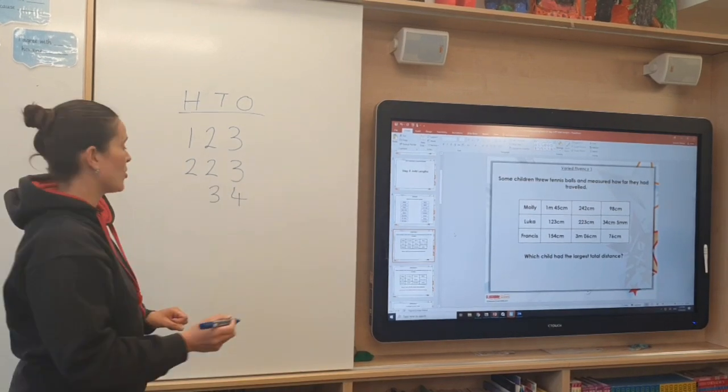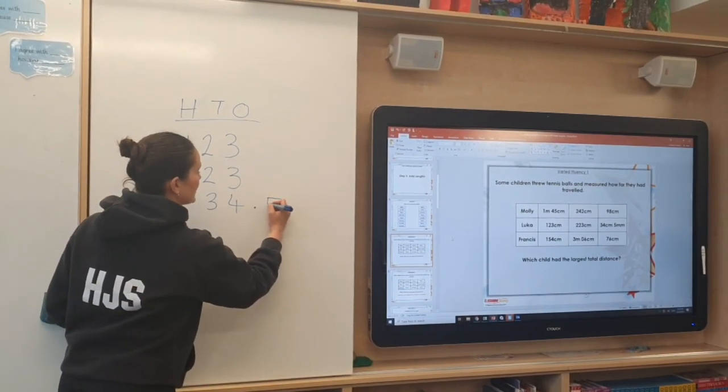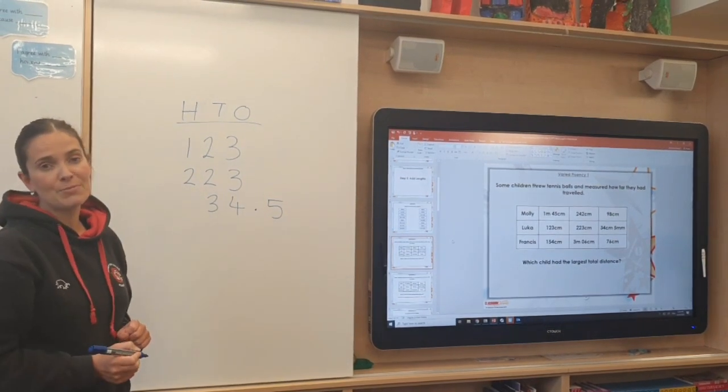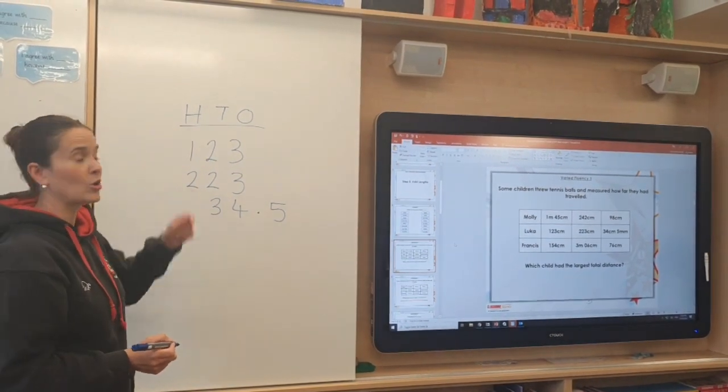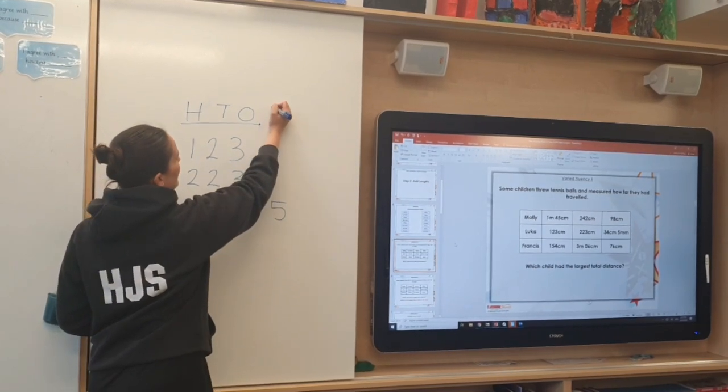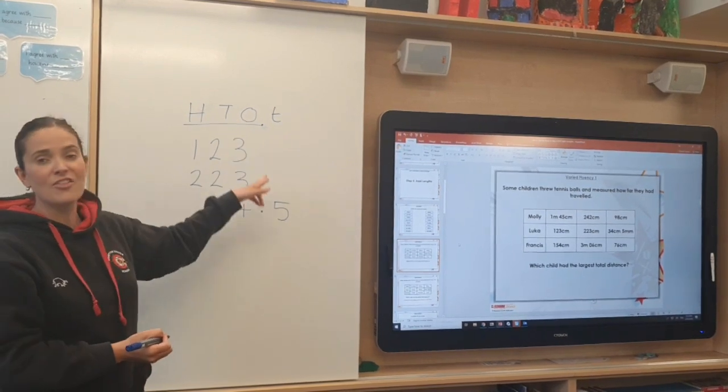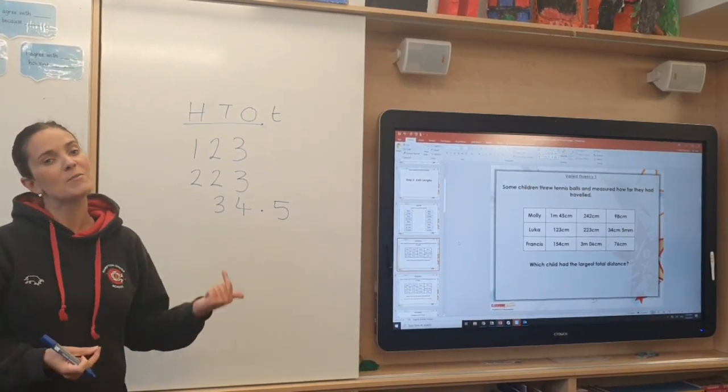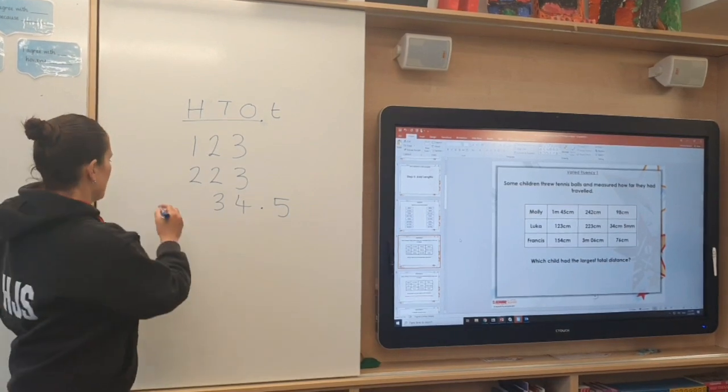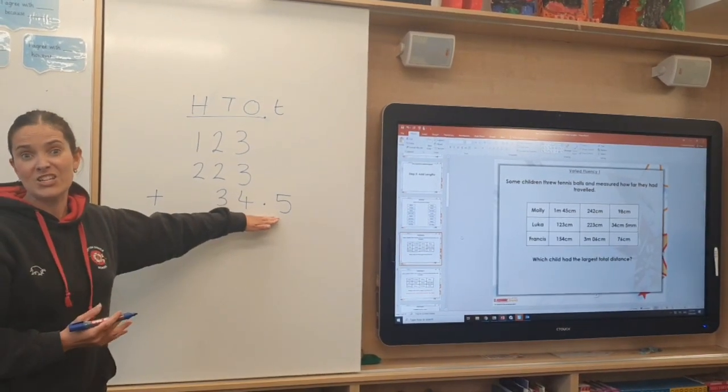And then for the 5 millimetres on the end I actually need to have my tenths column in my place values columns up here. Now we did look a little bit at having a decimal point and then another digit when we were looking at working on perimeter last week. So hopefully this looks a bit familiar to you.